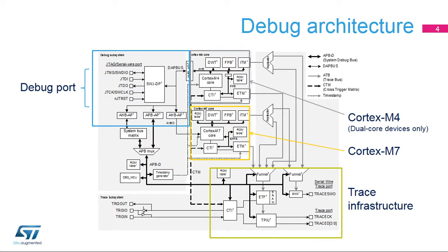Cortex-M7 Core includes the processor and associated trace and debug units: DWT, FPB, ITM, and ETM. And Cortex-M4 Core, for dual-core devices only. In addition, there are system debug features, including cross-trigger interfaces and matrix, or CTI and CTM. These allow simultaneous halting of both cores, triggering of trace, etc. Global timestamp generator provides a common time reference for the different trace sources.